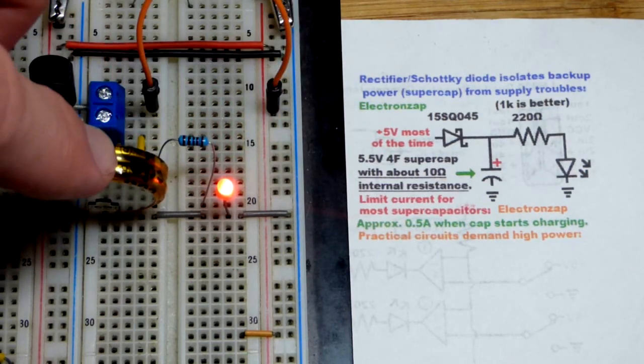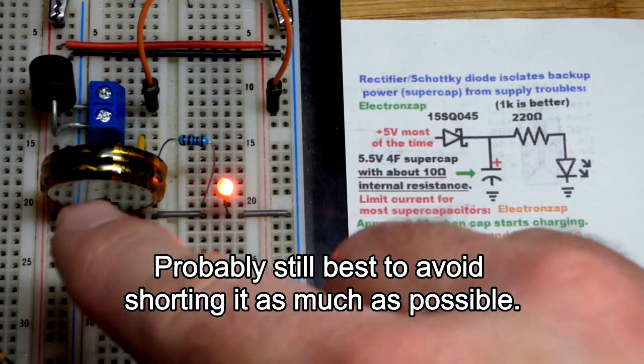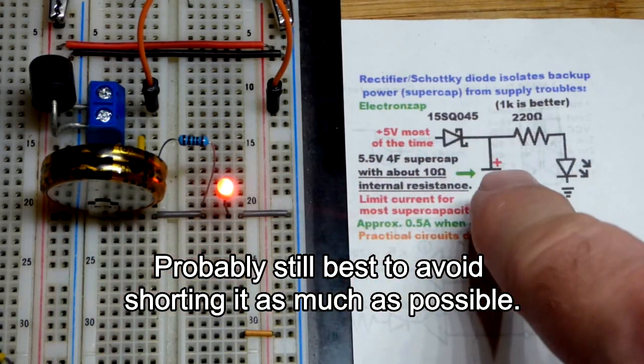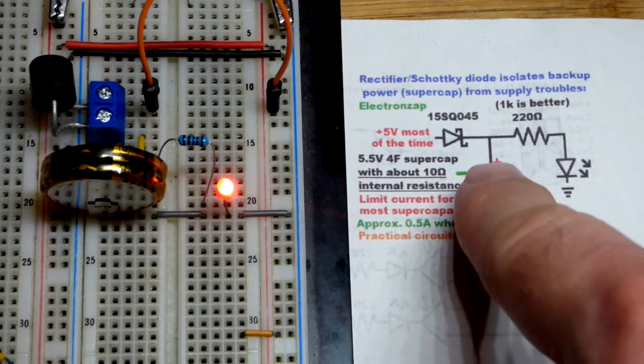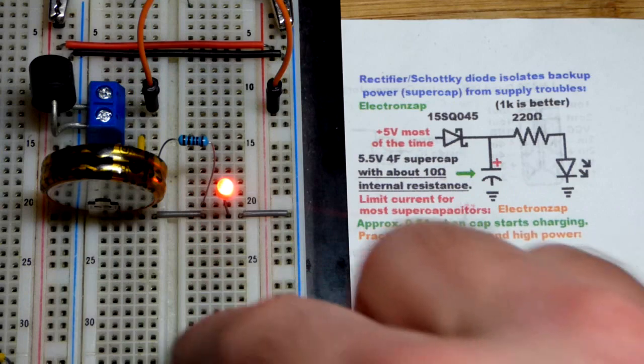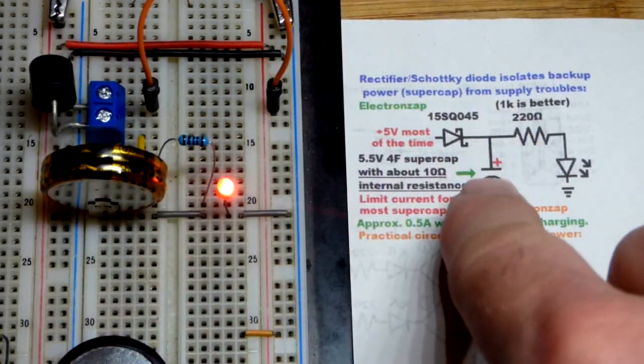This super capacitor also has internal resistance so we can just short it to the power. It's going to limit how much current goes into it to a safe amount and then when it's charged it's probably about 10 ohms of resistance when we looked at the last video with this one but it looks like it may have gone up overnight while I kept it charged.